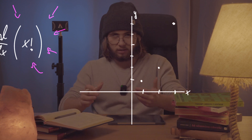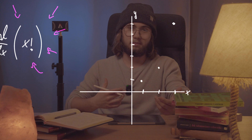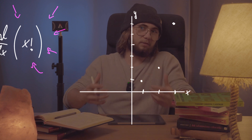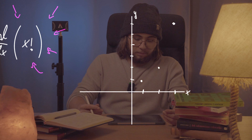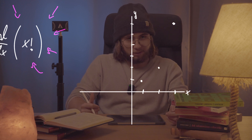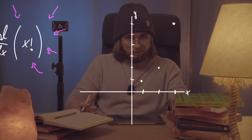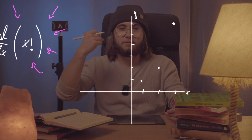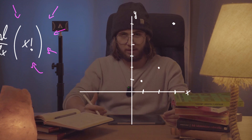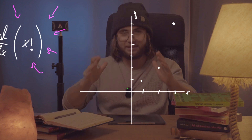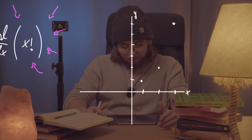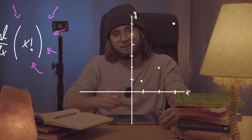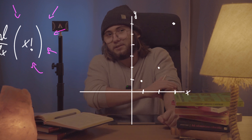x factorial is a discrete function that only takes in integers and outputs integers. This function is everything but continuous. And the number one condition that a function has to satisfy in order to be differentiable is that it has to be continuous. So how are we supposed to differentiate something that is absolutely not continuous?